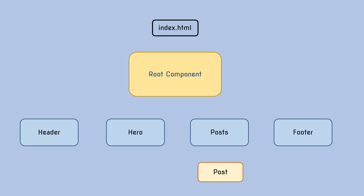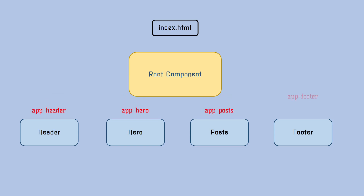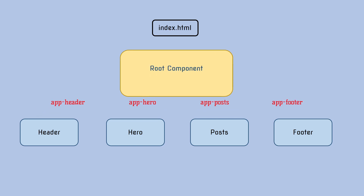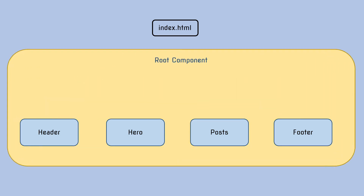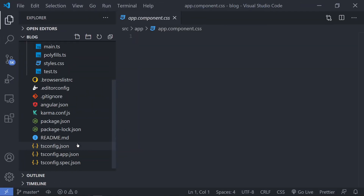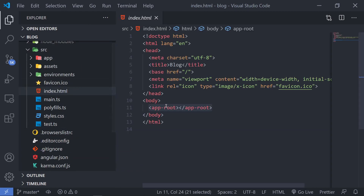We have all of these components and we have to actually include them inside our app root component. The way we actually embed these components inside the root component is by using the selector that is given to each and every component. Each and every component has a selector — you can think of it as the name of that component — which we can type inside the root component and that particular component will be embedded into the root component.